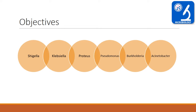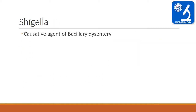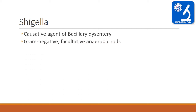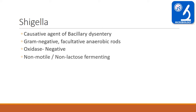Let us start with Shigella. It is important because it is the causative agent of bacillary dysentery, which means diarrhea with mucus and blood. We can differentiate bacillary dysentery from amoebic dysentery; the causative agent of amoebic dysentery is Entamoeba histolytica parasite. Shigella is a gram-negative facultative anaerobic rod, oxidase negative, non-motile, and gives lactose non-fermenting colonies on MacConkey agar.